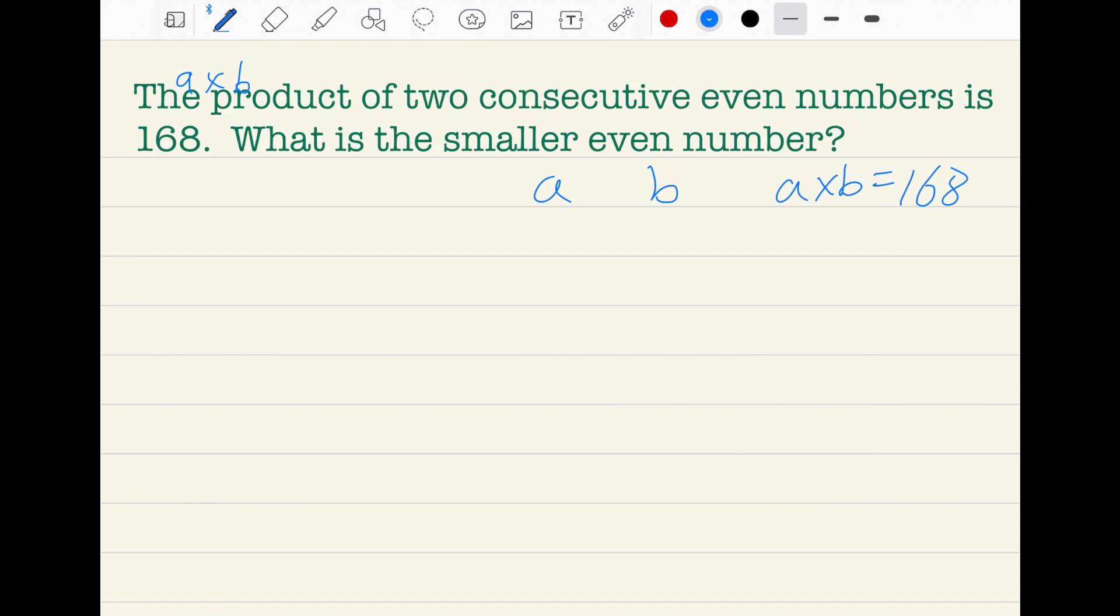Okay, so 2 times 84 equals 168. But let's just check if this is the answer. 4 times 2 equals 8, 2 times 8 equals 16. That makes 168. So this is correct.